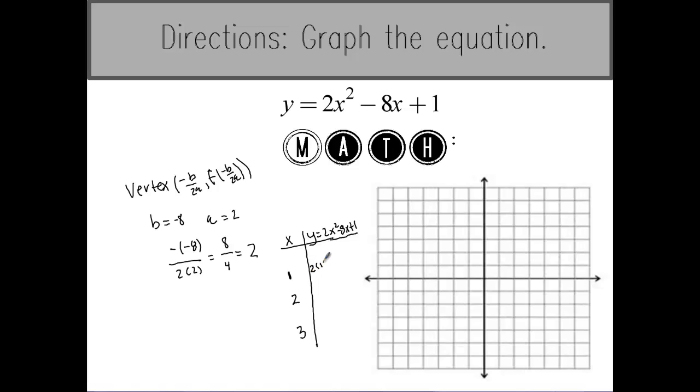The first one I plug in is 1. One squared is 1, 1 times 2 is 2 so this part simplifies to 2. Negative 8 times 1 is negative 8 then I'm going to add 1. 2 minus 8 is negative 6, negative 6 plus 1 is negative 5 so my first point is 1, negative 5.